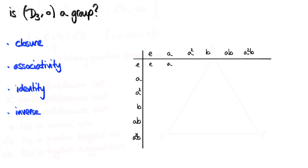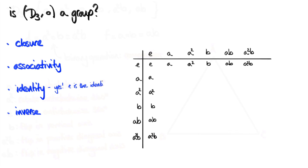E blob A is equal to A. Moving to the second row and first column, remembering that the element on the left side comes first and the element on top comes second, we have A blob E. This means firstly do nothing, then perform transformation A — that's just A again. So A blob E equals A, and E blob A equals A. The identity transformation composed with any other transformation just gives back that same transformation, so we can fill in the whole top row and first column. This means our group has an identity element, satisfying that condition.